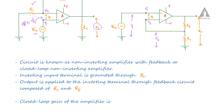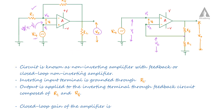This circuit is known as a non-inverting amplifier with feedback — a closed-loop non-inverting amplifier. The inverting input is grounded through R1, and the output is applied to the inverting terminal through a feedback circuit composed of R1 and RF.